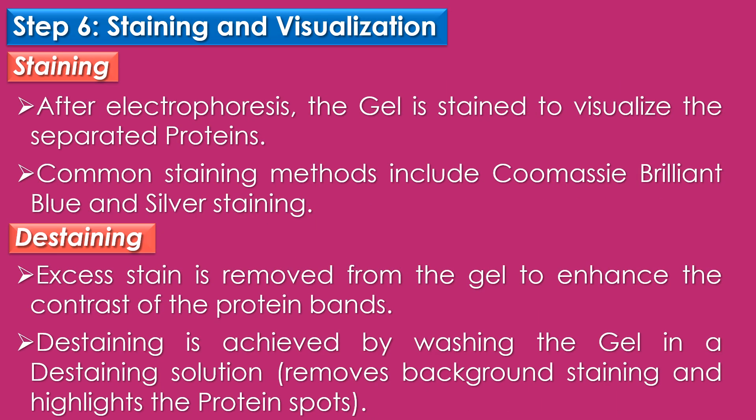Step six is staining and visualization. After electrophoresis, the gel is stained to visualize the separated proteins. Common staining methods include Coomassie blue and silver staining. Coomassie blue binds to proteins and provides a blue coloration, while silver staining offers higher sensitivity for detecting low-abundance proteins. In destaining, excess stain is removed by washing the gel in a destaining solution, which removes background staining and highlights the protein spots.